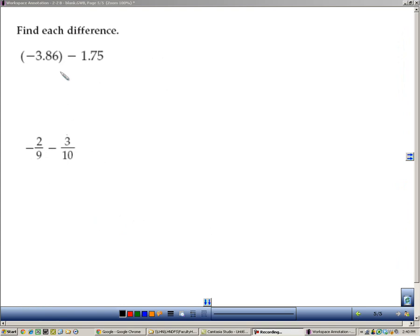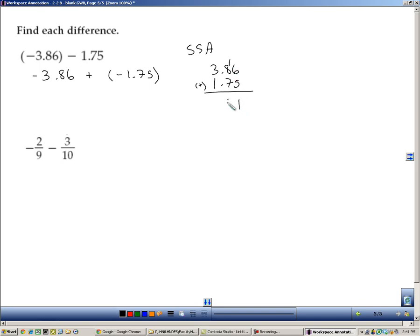Here's a couple more subtraction problems. We'll start by turning them into addition. So negative 3.86, we'll add the additive inverse, which is negative 1.75. Now they have the same sign, so we use the same sign add idea. Take the absolute values and add them together, which is 5.61. Now we have to look back. The bigger absolute value is this number, and because it's negative, we will use that sign on our answer. So negative 5.61.